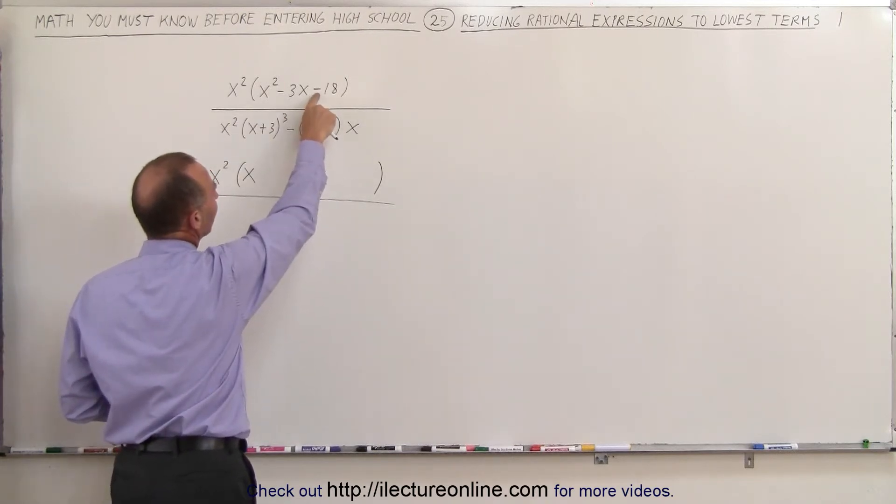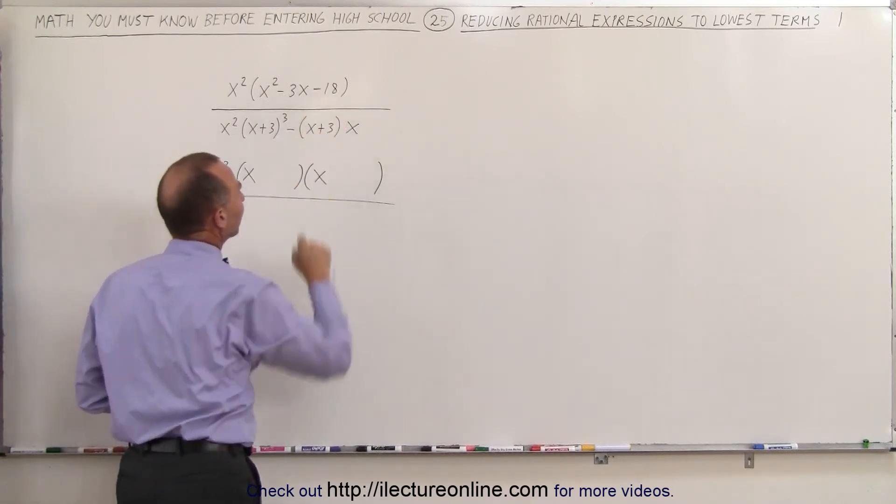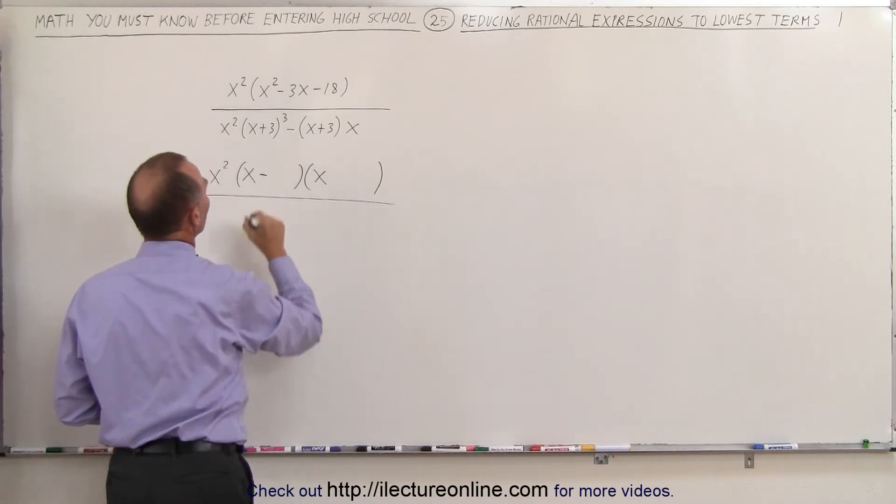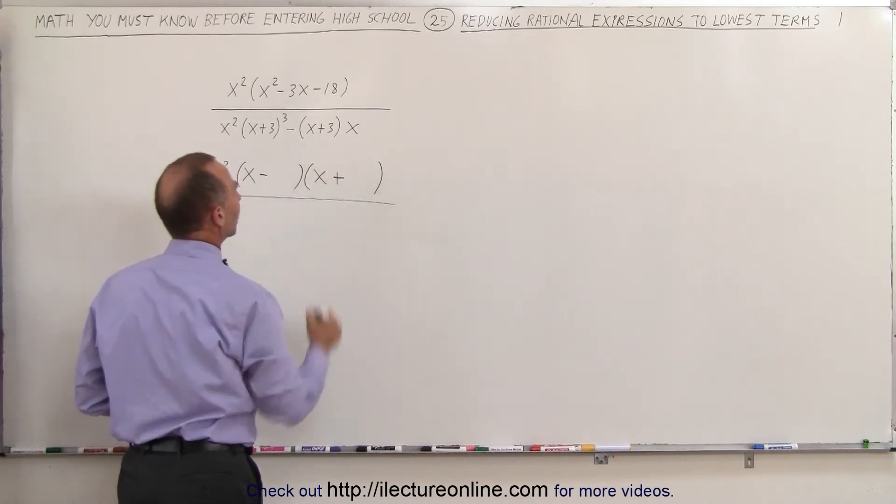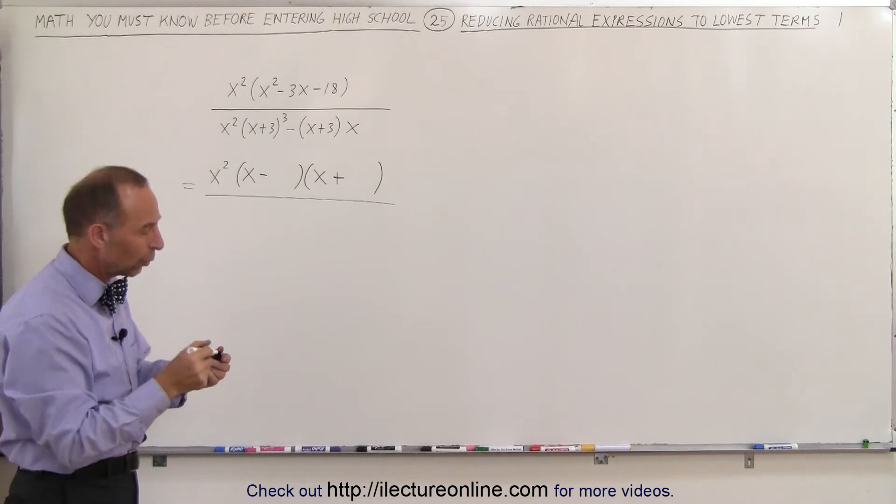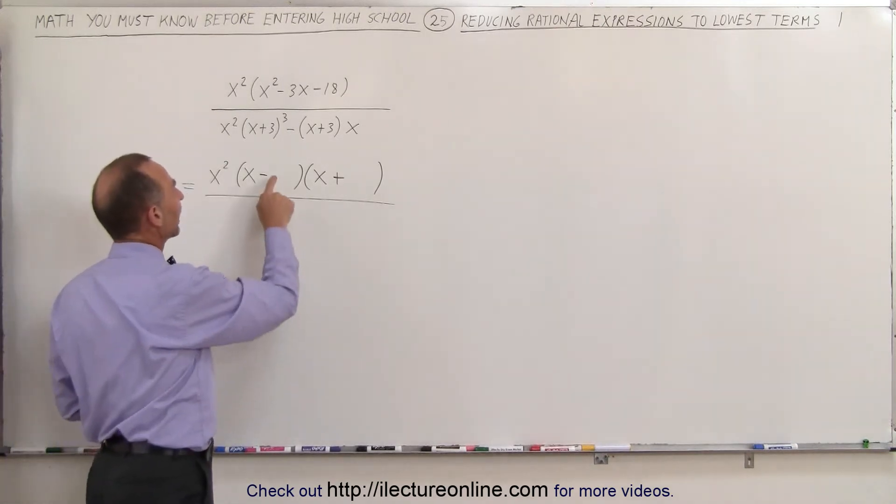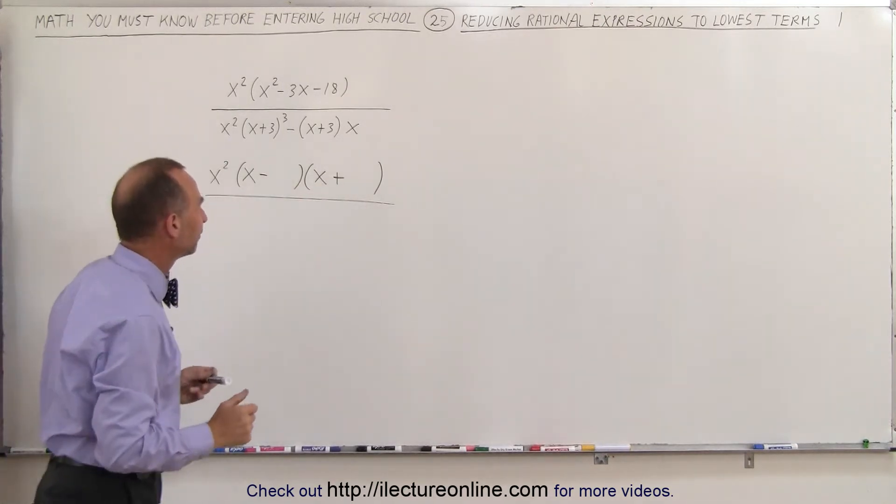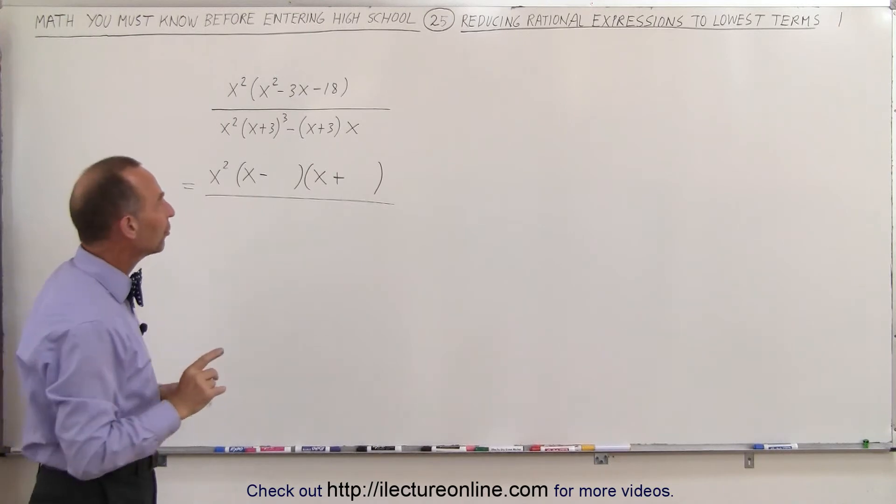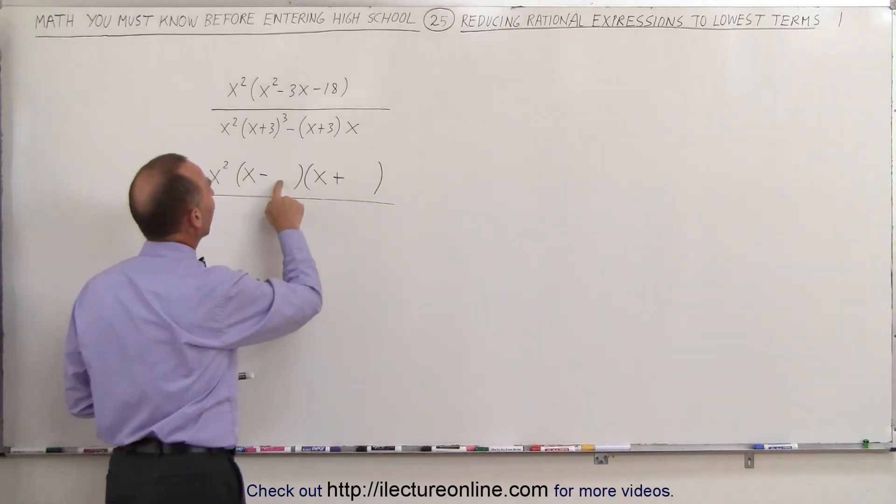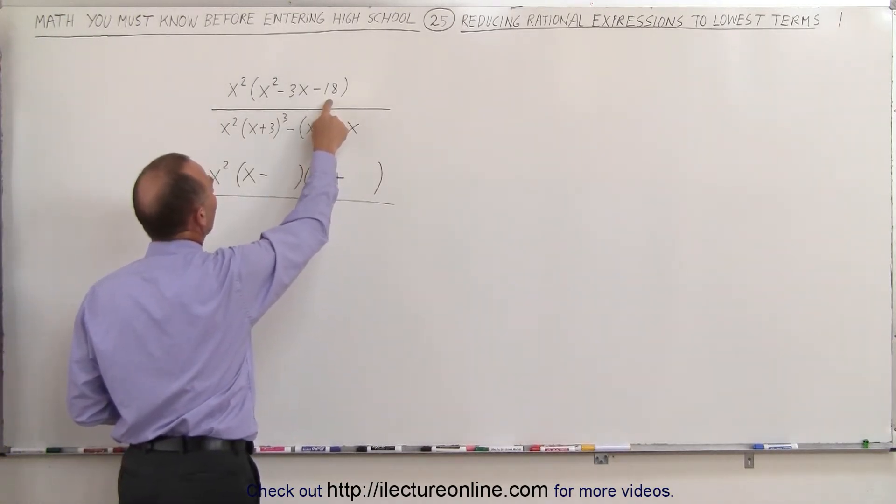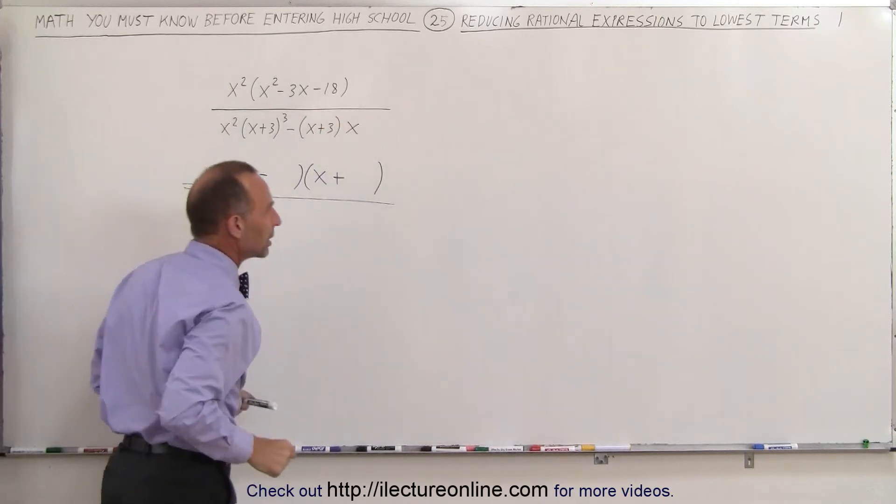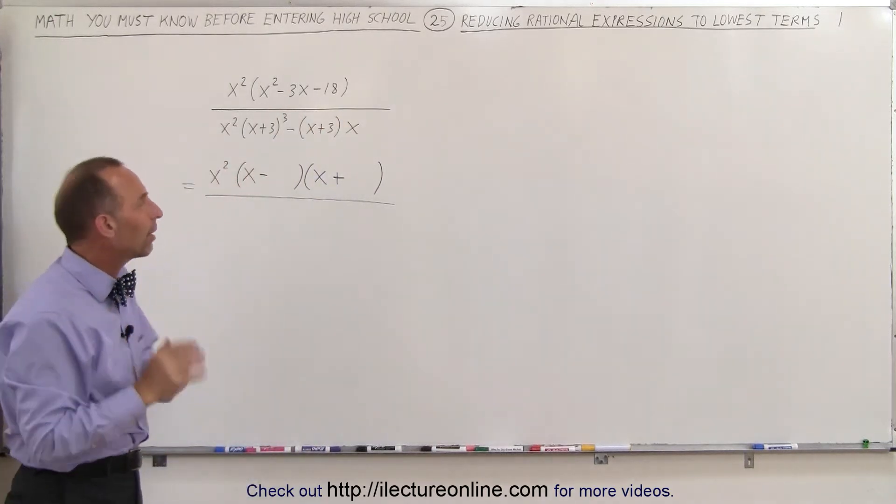Notice with the sign here, if this is negative, the only way to get a negative 18 here is if one of these numbers is negative and another one of the numbers is positive because you can get only a negative number when you multiply a negative and a positive number together. So now we're looking for two numbers. When I multiply them together, I get a negative 18, and when I add them together, I get a negative 3.